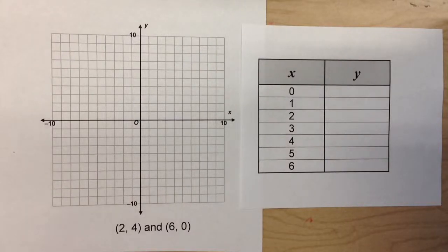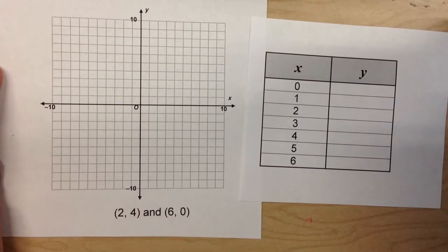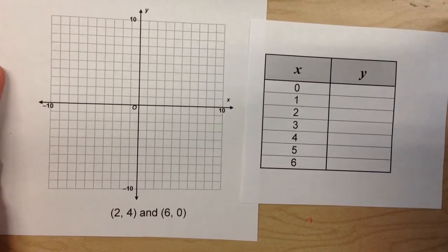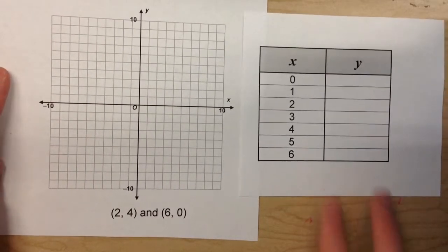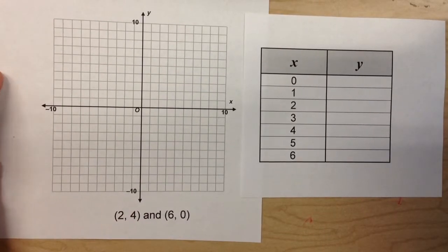Today we learned how to write an equation for a line given just two points that the line goes through, and we learned how to do this in two different methods. For example, let's say we have the coordinates 2, 4 and 6, 0, and those are two points on our line.